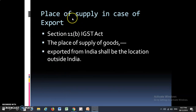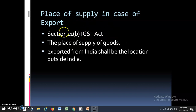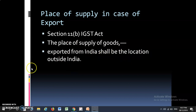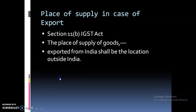Ab ek aur question aata hai ki place of supply export ke case mein kya maana jaayega? As per Section 11B of IGST Act, the place of supply in case of supply of goods shall be the location outside India. Means in case of export of goods, the place of supply will be the location outside India.